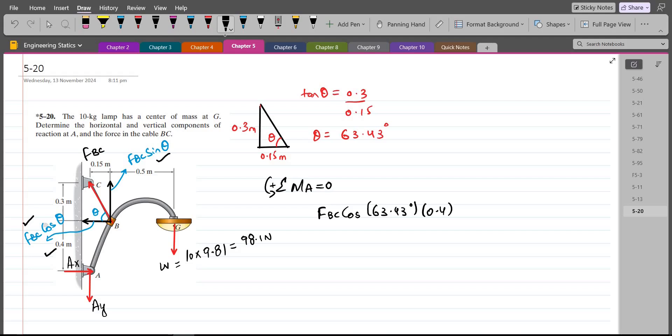This FBC sin theta force is also trying to rotate the lamp in counterclockwise direction about point A. So the moment produced by this FBC sin theta force will be taken as positive. And the moment arm is 0.15 meters distance.